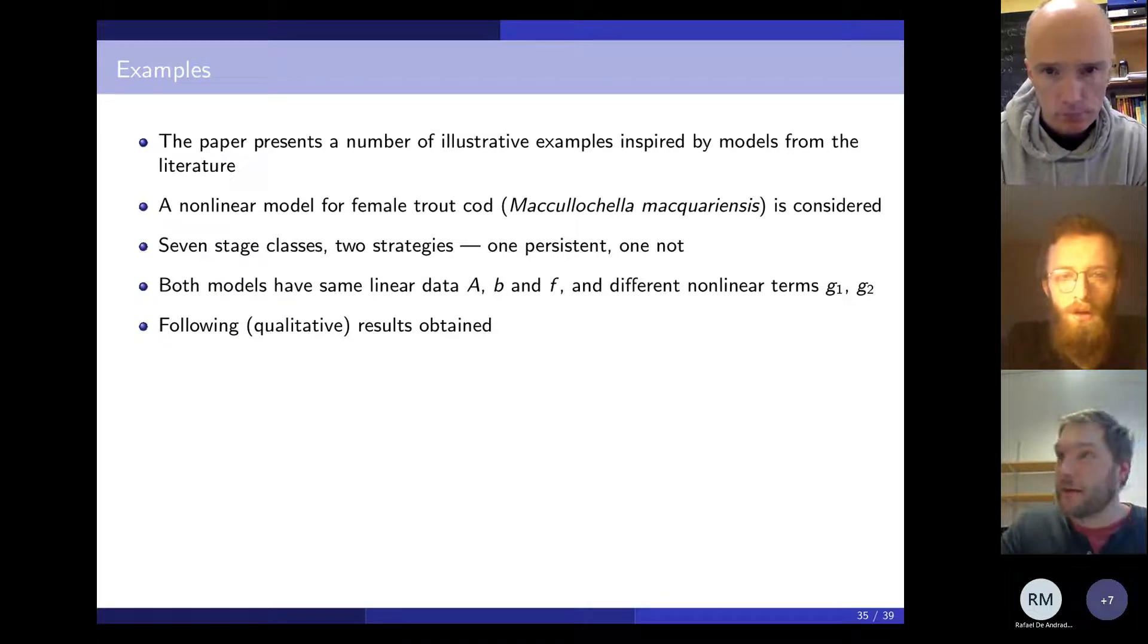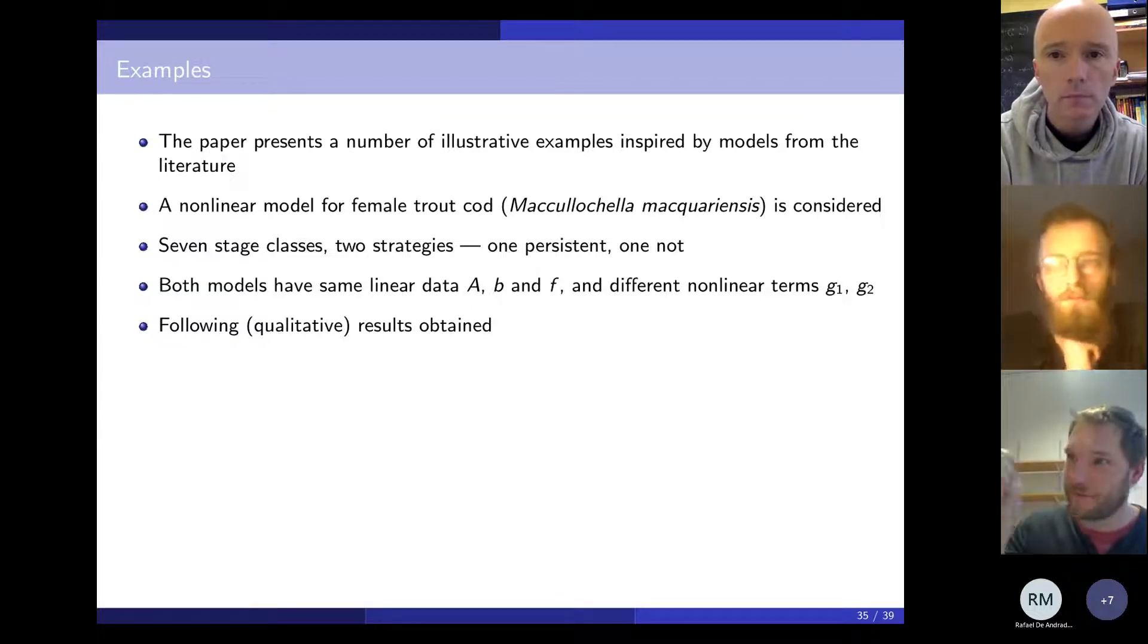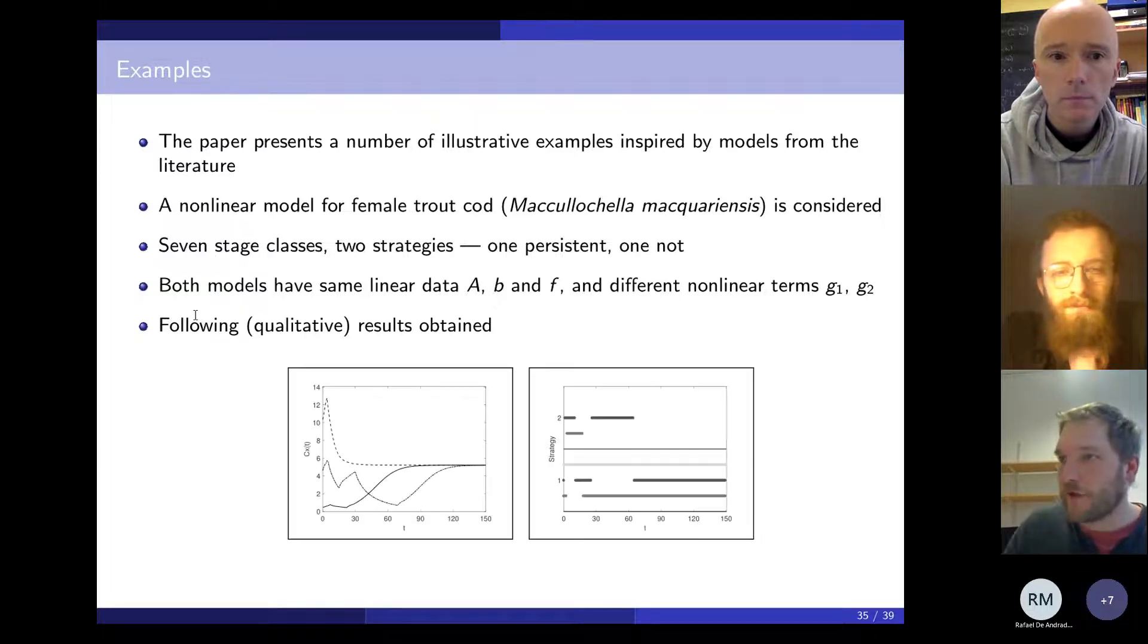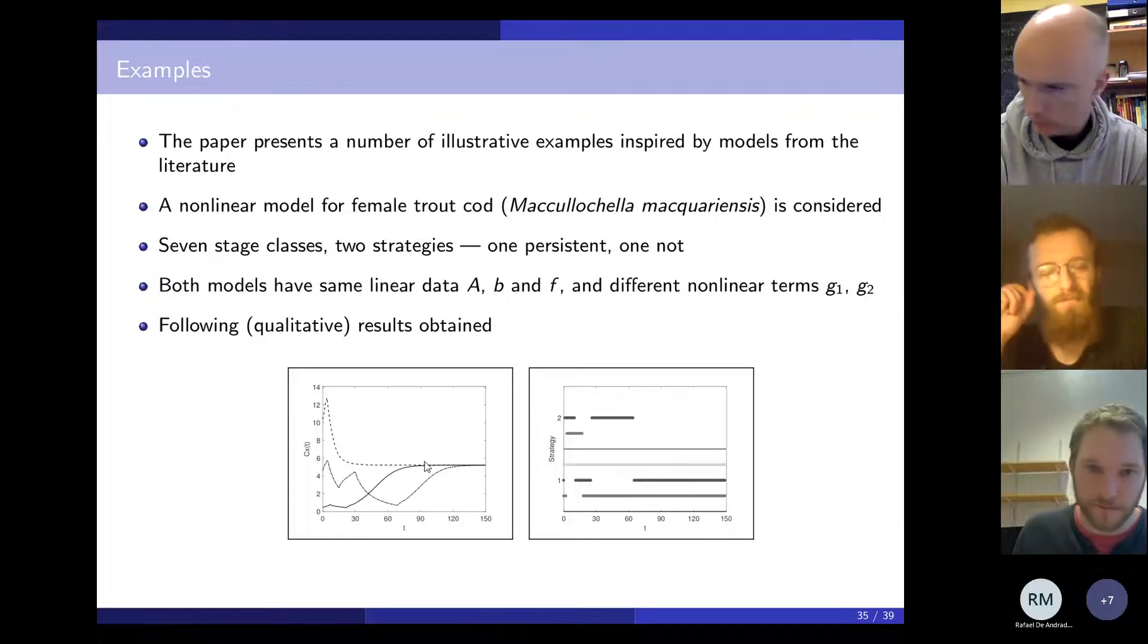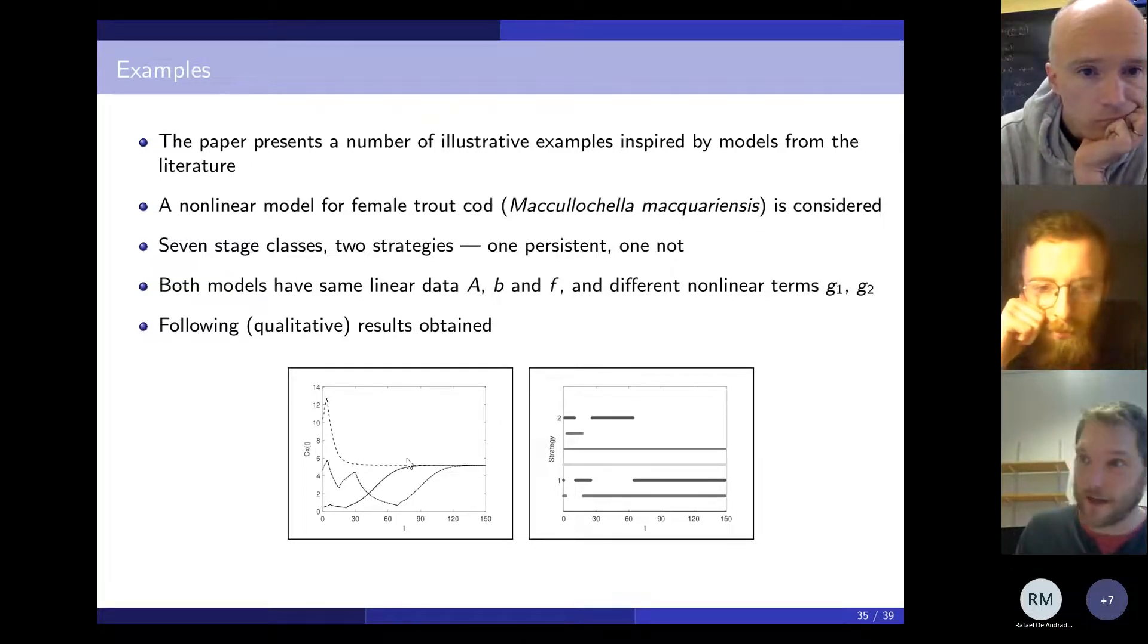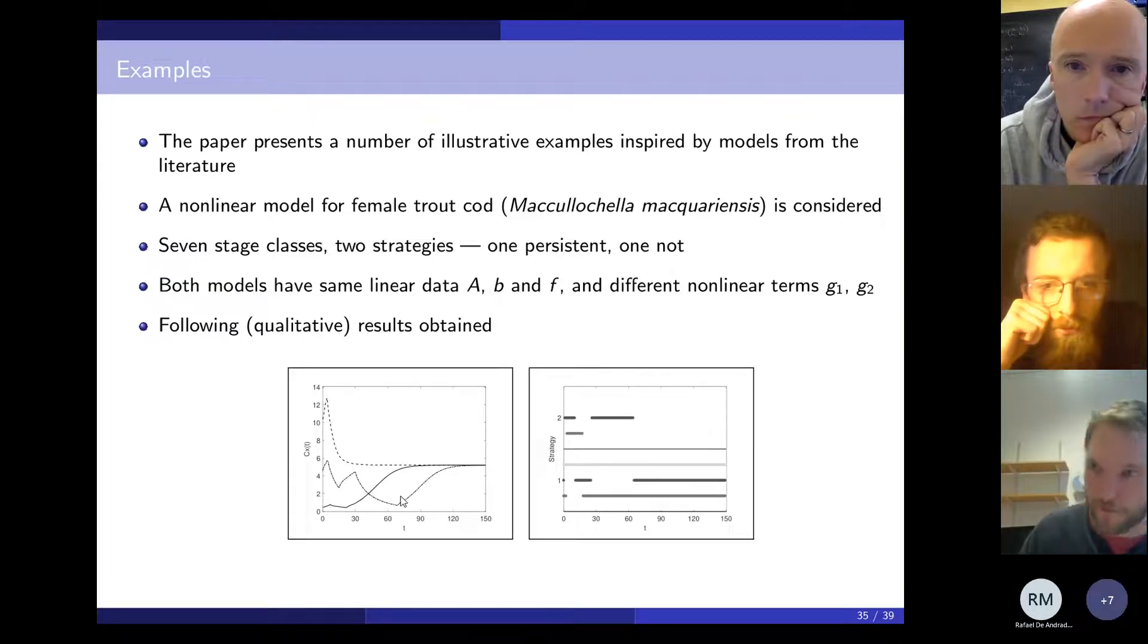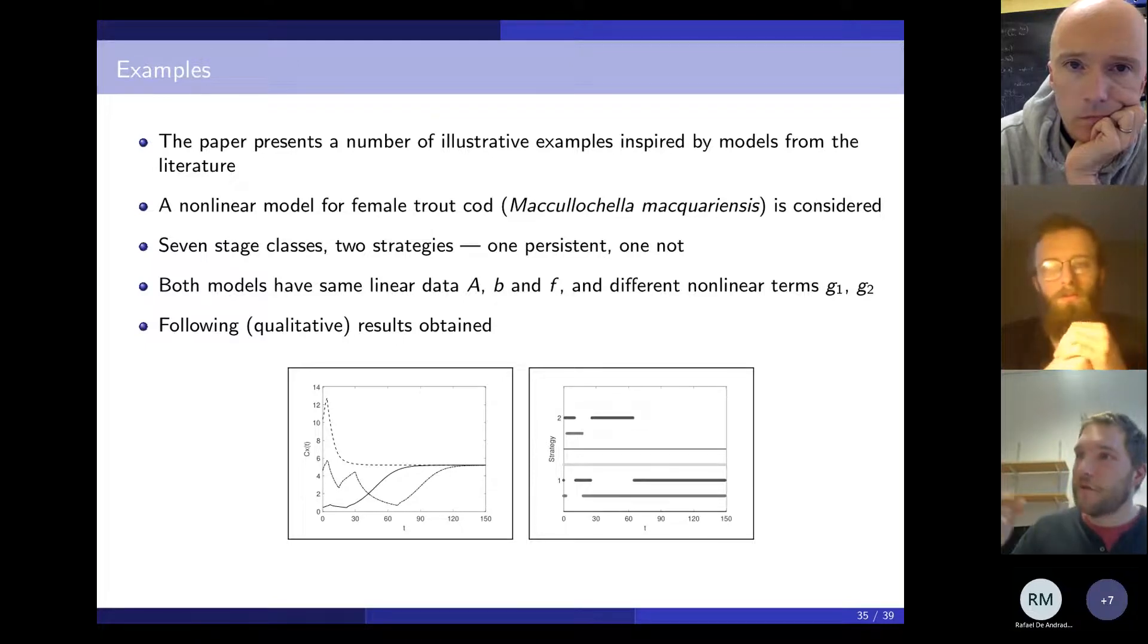The paper under discussion contains a number of examples based on models from the literature. I just summarize one quickly—a female trout cod, seven stage classes. We pick two strategies, one is persistent, one is not. They have the same linear data ABF, but different nonlinear terms. You get the following kind of qualitative results. The left-hand plot is measured abundance, and the right-hand plot is which strategy. You see that these light grey dots in the right-hand plots, you never change strategy. That's this dotted line—you have some transient behavior and then you have an equilibrium. This model admits a non-zero equilibrium. These other two strategies, they change from strategy one to strategy two over time, before both settling down on strategy two, which is the persistent strategy in this case. My solutions wobble around a bit before finding the persistent strategy and converging to the non-zero quantity. All of the results we obtained are of that sort of form—they illustrate the theorem.